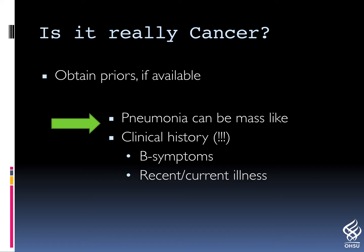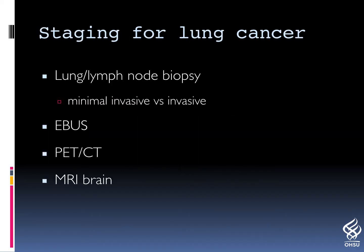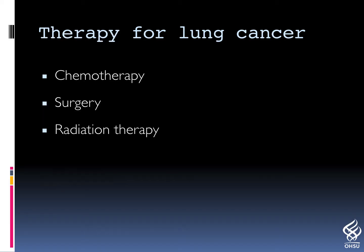It is important to obtain prior studies if they are available. Pneumonia can be mass-like. Clinical history with B symptoms or recurrent or current illnesses are very important to obtain. Staging for lung cancer can be done with multiple diagnostic tools. Often, tissue sampling is obtained of both the primary mass and lymph nodes if they are involved. Advanced imaging with PET-CT and MRI of the brain concludes the staging. The therapy rests on three pillars — chemotherapy, surgery, and radiation therapy — and is applied according to the patient's staging.